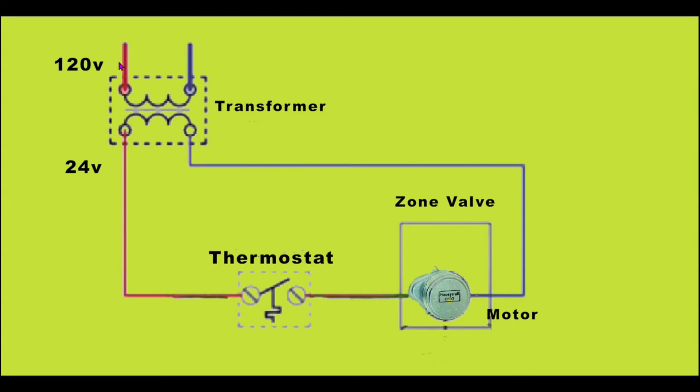So again, we have 120 volts coming in, 24 volts coming out. The thermostat is controlling the current to this motor which has two wires being connected: one to the thermostat and back up to the transformer.